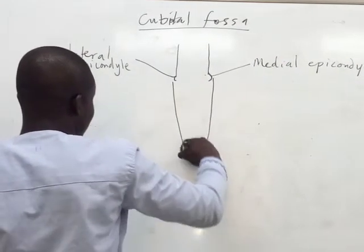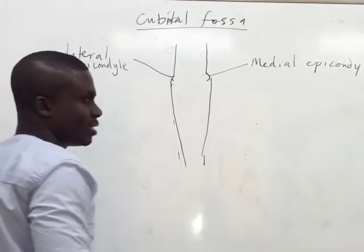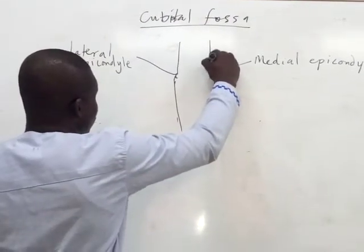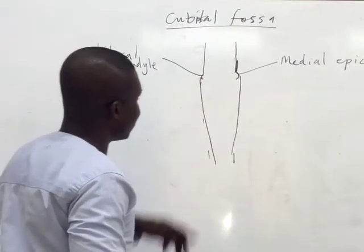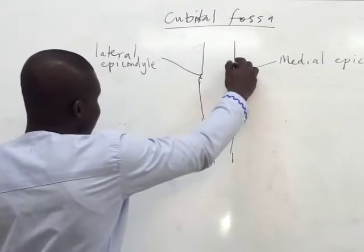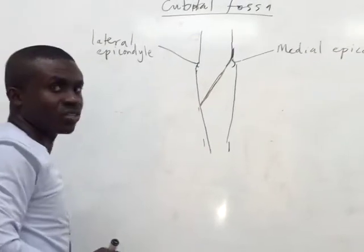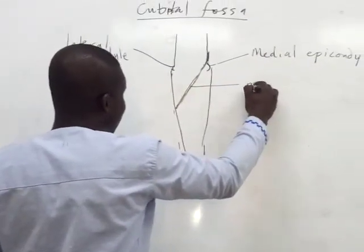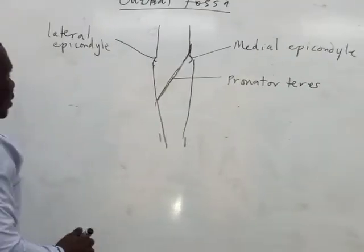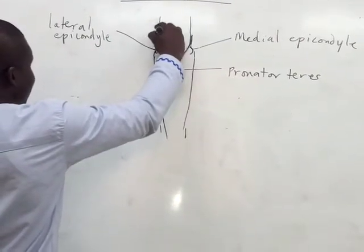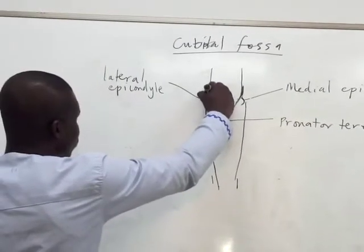Assuming this is the forearm. What we find is that at the medial supracondylar ridge, the humeral head of the pronator teres takes origin from that side, and it inserts onto the anterior aspect of the shaft of the radius. This muscle is known as the pronator teres muscle. Now, the lateral supracondylar ridge gives origin to the brachioradialis muscle.